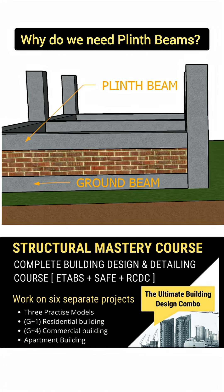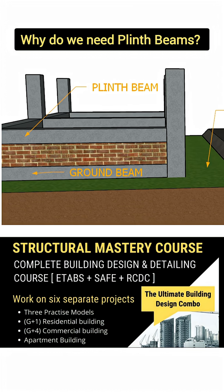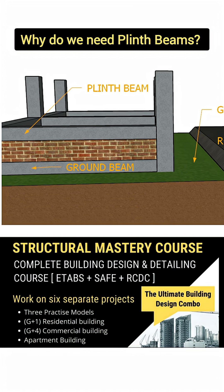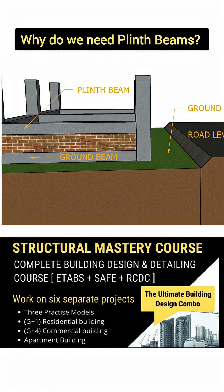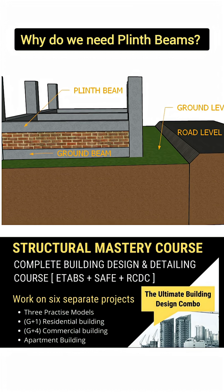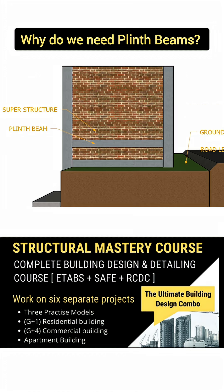That's why a plinth beam is provided just above the ground level — to provide a rigid base for the superstructure, prevent uneven settlement, distribute wall loads uniformly, and ensure lateral stability. In short, the plinth beam acts as the starting platform for your superstructure.